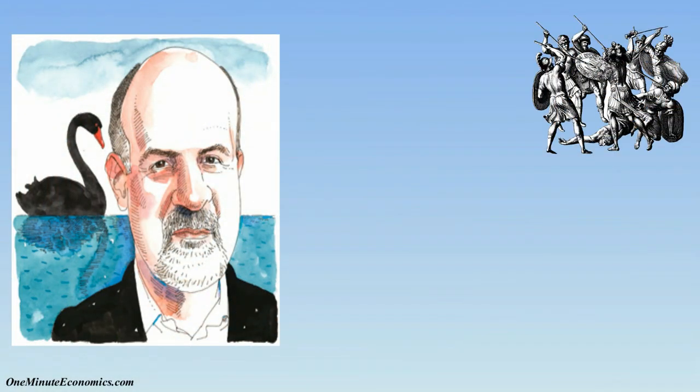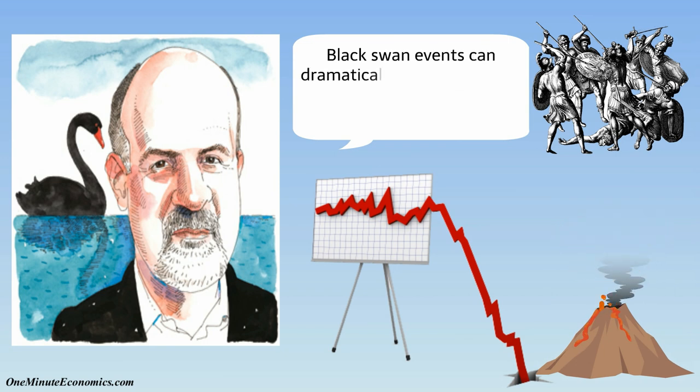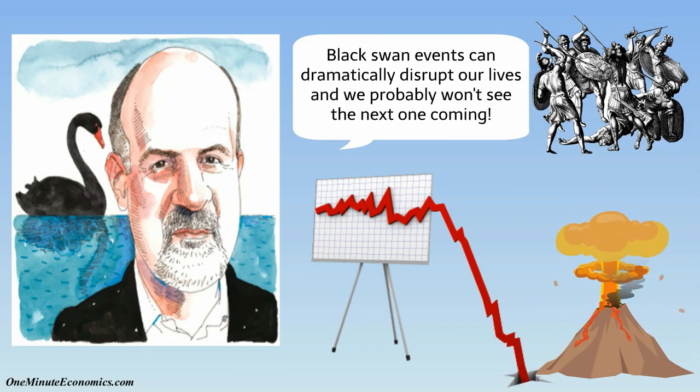In his book, The Black Swan, Nassim Nicholas Taleb describes certain highly surprising events which generate devastating effects and are considered obvious in hindsight, but certainly weren't perceived as obvious when they occurred.